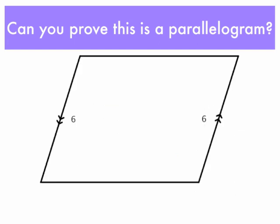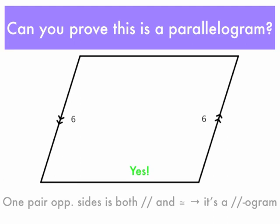How about this one? Remember, the arrows indicate parallel lines. And since both lengths are 6, we would say one pair of opposite sides is both parallel and congruent. So that implies that this is indeed a parallelogram.